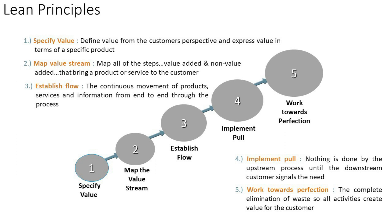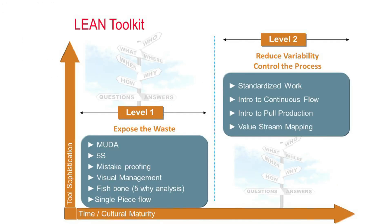The fourth Lean principle is implementing pull — nothing is done by the upstream process until the downstream customer signals the need, so you do not produce when it is not needed. The fifth principle is to work towards perfection: the complete elimination of waste so all activities create value for the customer. This leads us to the Lean toolkit with level one and level two tools.